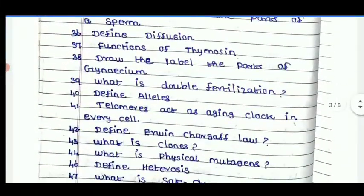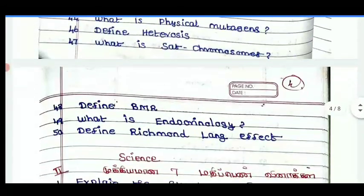You will see Science 1 and Science 2 — that is physics, chemistry, botany, and zoology. In biology, there are 52 marks.